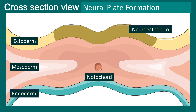This is still ectoderm, but these cells have different properties — different adhesion properties among themselves, different molecular markers. This is the region which eventually gives rise to the neural tube, and this particular region is also known as the neural plate.